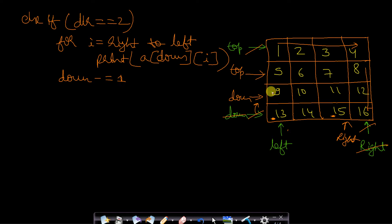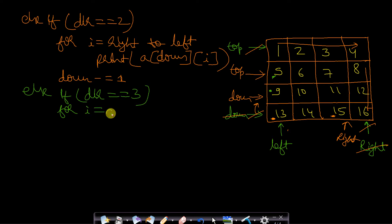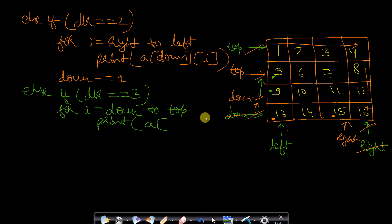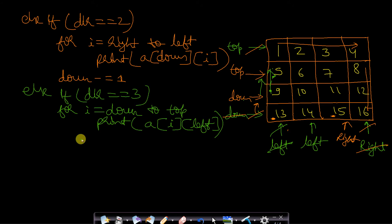For direction == 3, we move from bottom to top and print 9 and 5. We loop i from down to top, keeping the column fixed at left, and print a[i][left]. The rows are decreasing while the column stays fixed. Once we've printed this entire column, we move the left pointer one position to the right: left += 1.